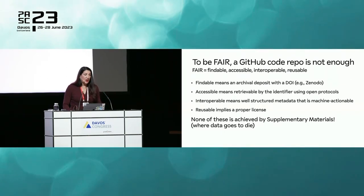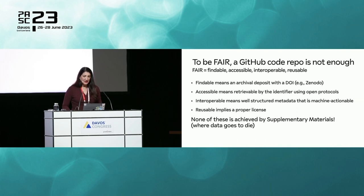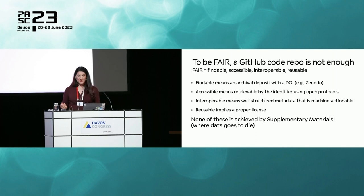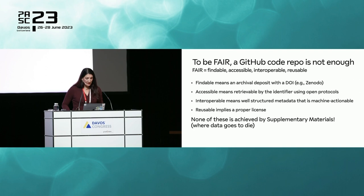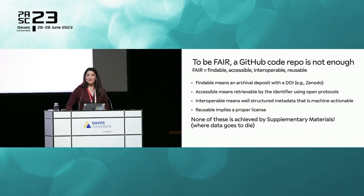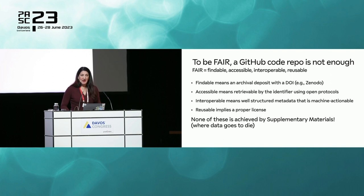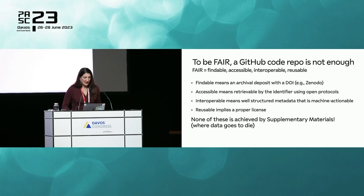It's becoming more common to see papers with code — even arXiv has a 'papers with code' tab. Authors list a GitHub repository hosting the code. That's great, but it's not enough. Findable — if you're familiar with the FAIR principles: findable, accessible, interoperable, reusable — findable doesn't mean a GitHub repository. Findable means an archival-quality deposit with a DOI. You must archive in Zenodo or a similar service that guarantees persistence of that material. Any owner can delete a GitHub repository at any time. There is no guarantee of persistence on GitHub — that's not what it's used for.